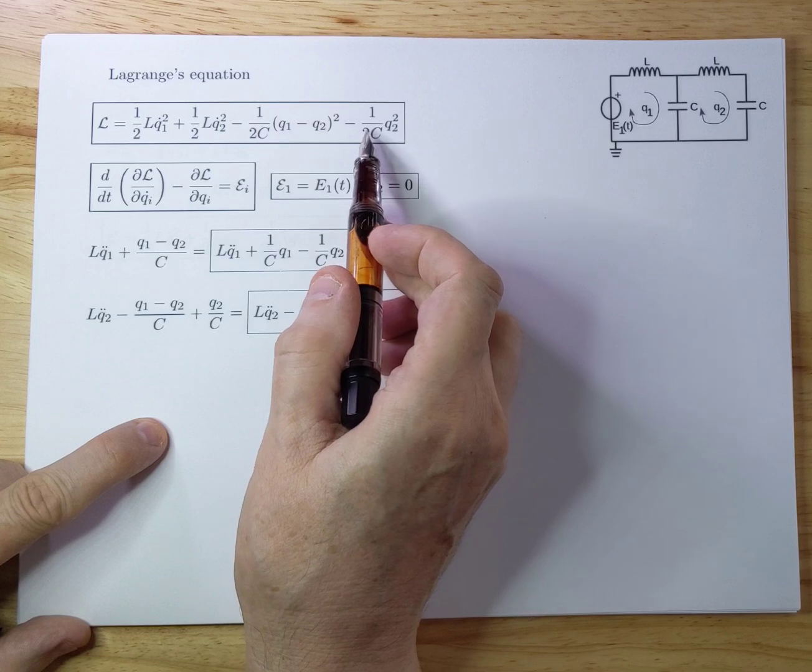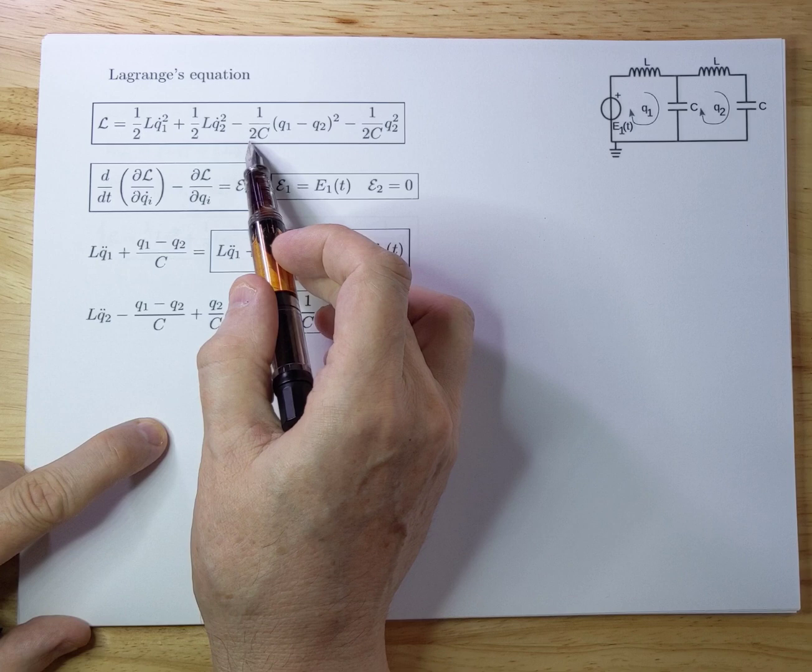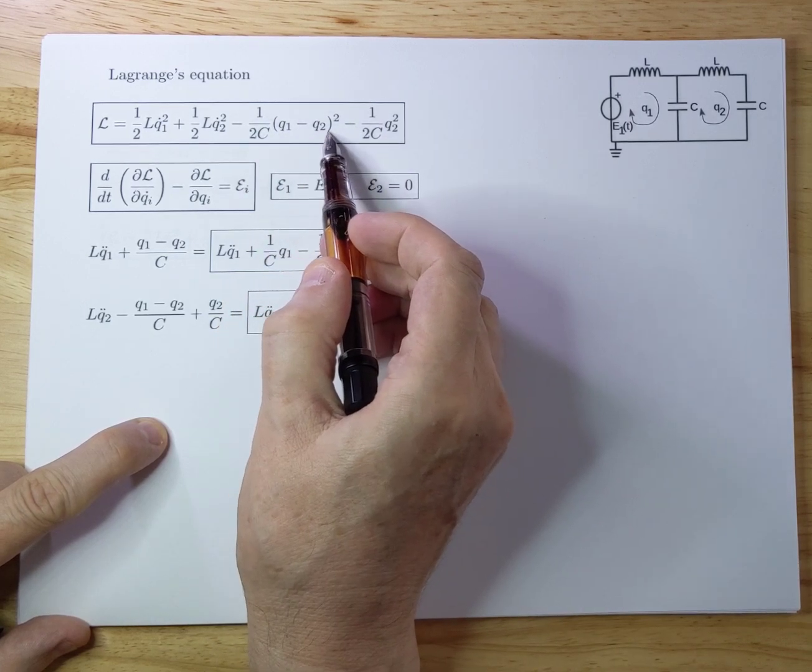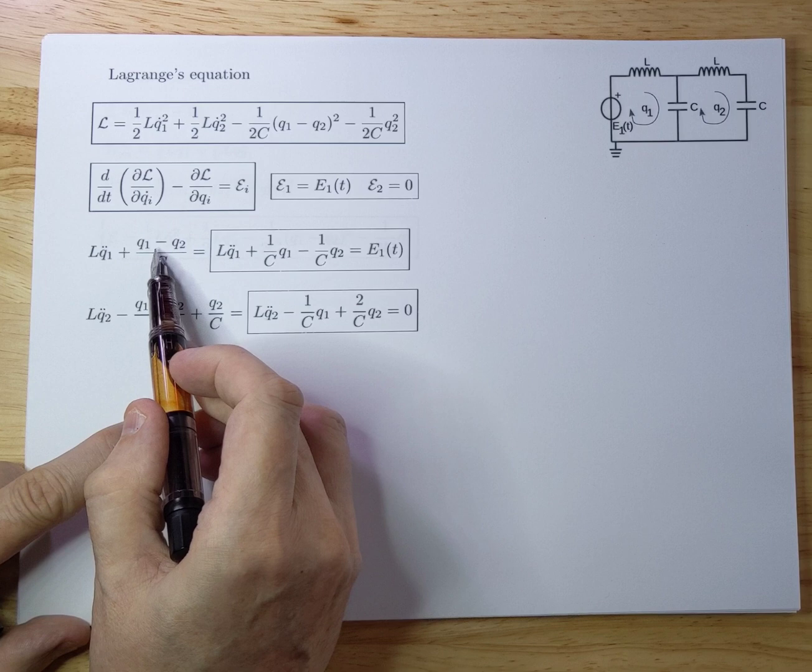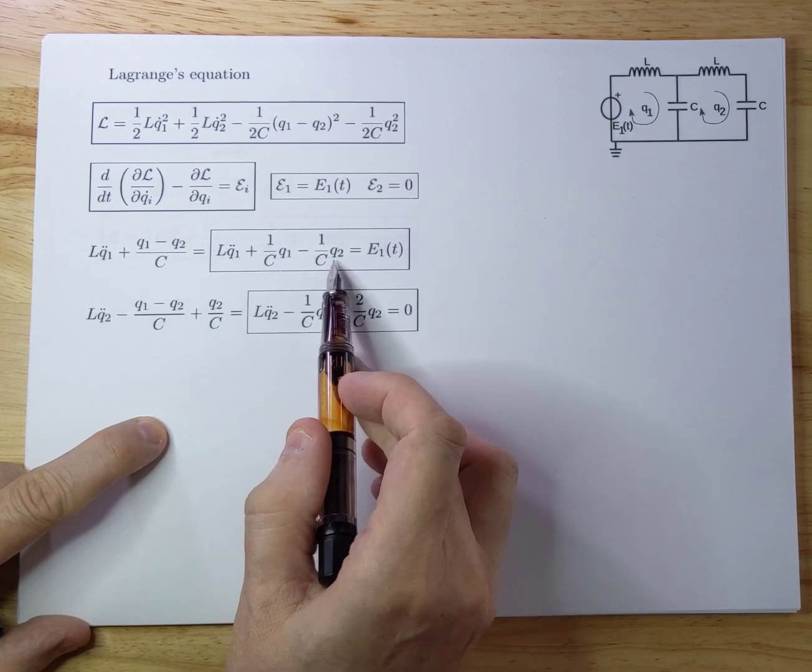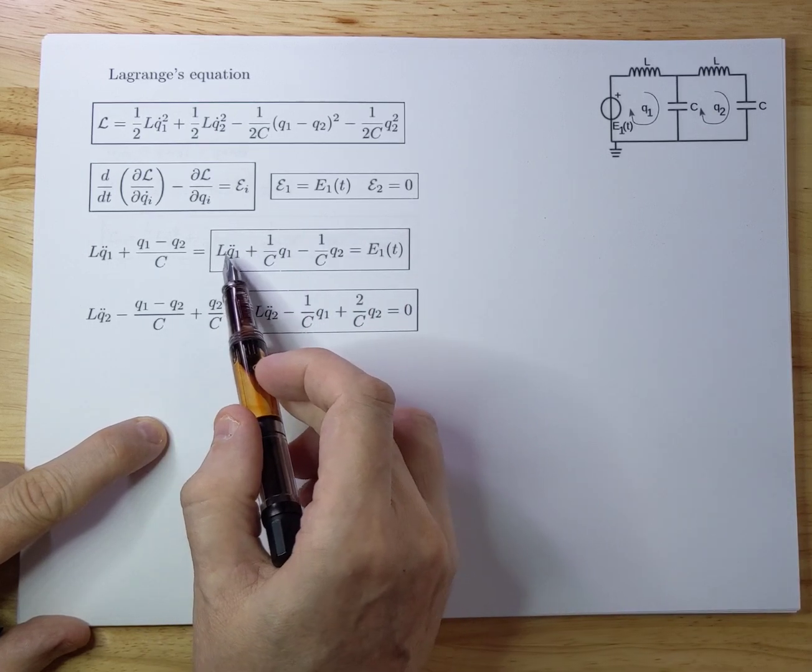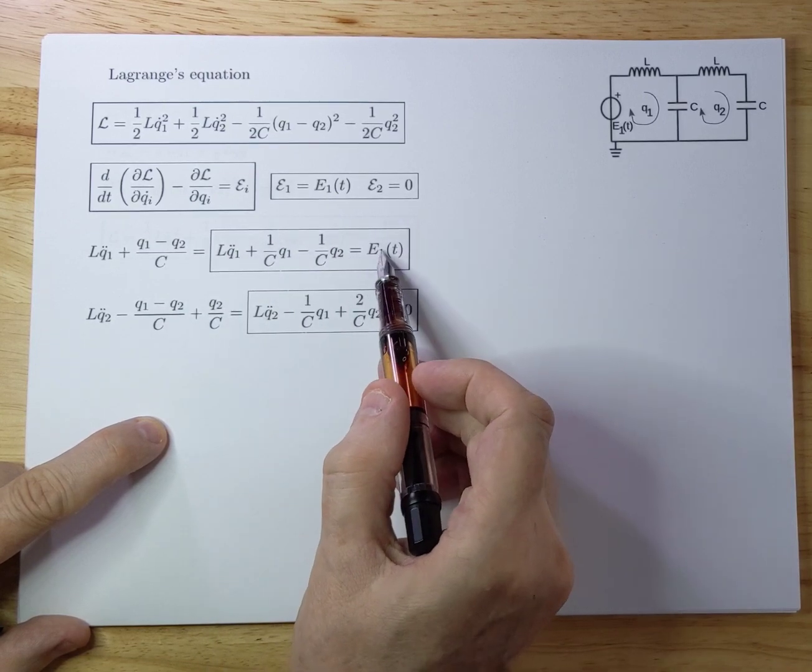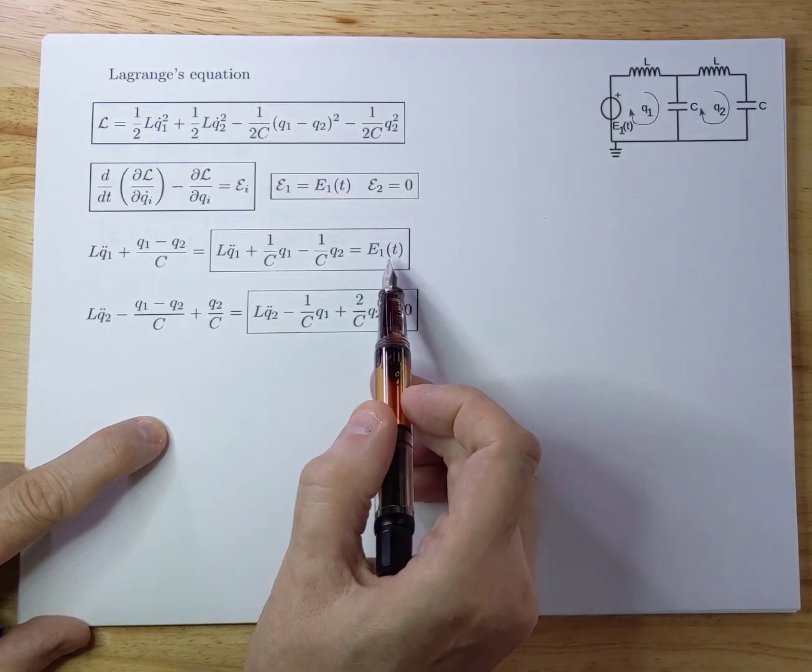The second term here is minus the Lagrangian with differentiation with respect to Q1. So again you look at the Lagrangian. You differentiate this with respect to Q1. And you get 2 divided by 2 that disappears, divided by C that will remain. And you get Q1 minus Q2 with a minus here. And that minus there gives you a plus here. So you get Q1 minus Q2 over C. And I rewrote that like so. So the first equation of motion here now is LQ1 double dot plus 1 over CQ1 minus 1 over CQ2. And that equals to the electromotive force E1. Because E1 was E1(t).